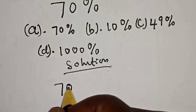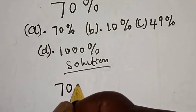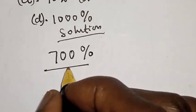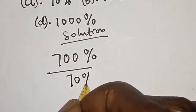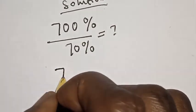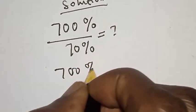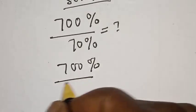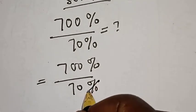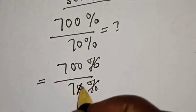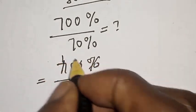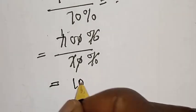So, we have the given equation: 700% divided by 70% is equal to what? This is 700% divided by 70%. Let's try and divide. This zero will cancel this zero, giving us 700 divided by 70, which is equal to 10.